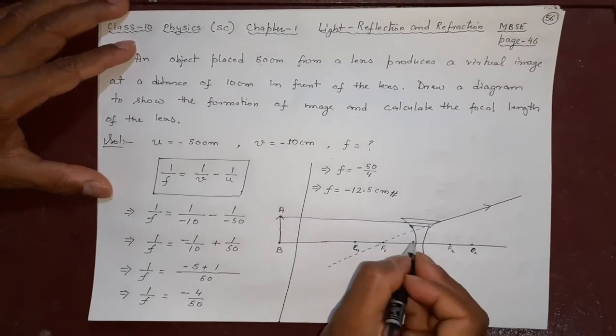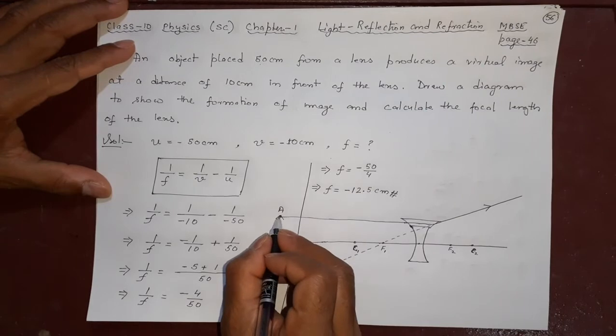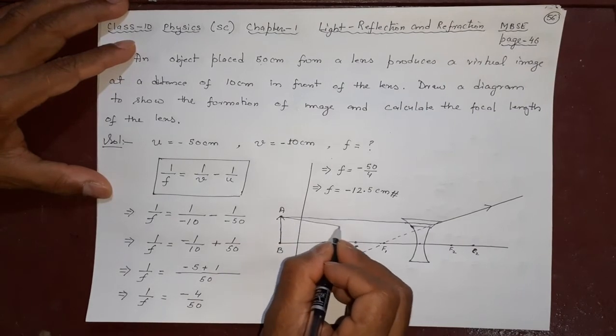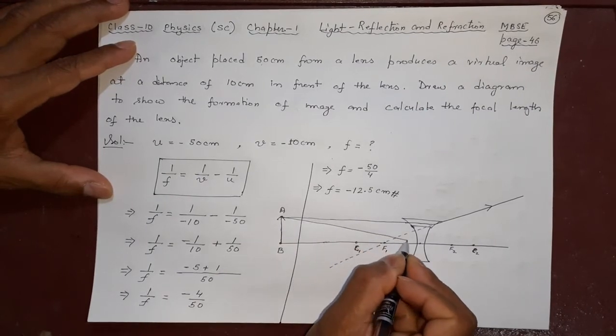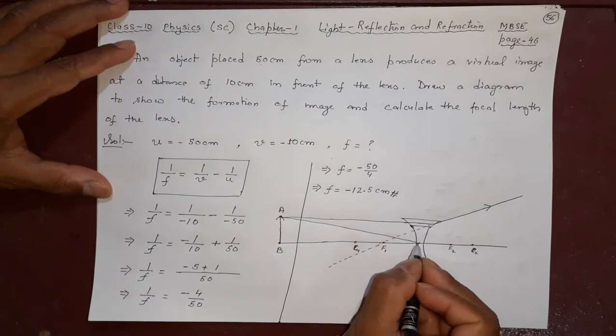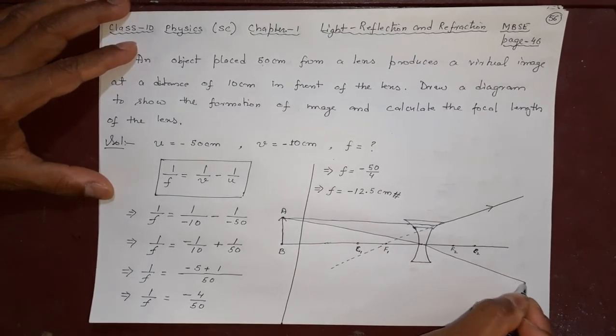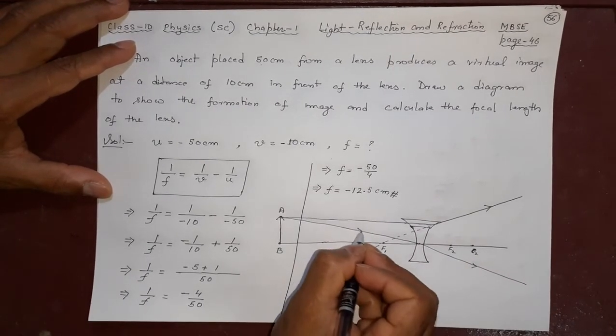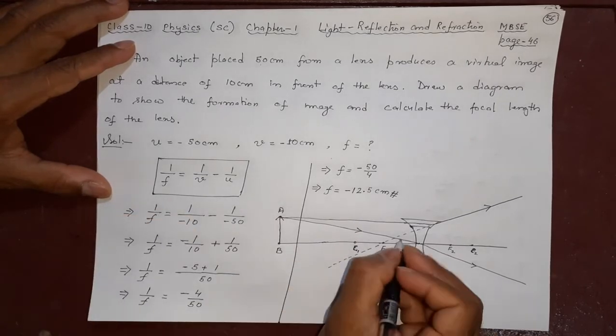What is the second thing that will happen? Second thing is it will pass from the optical center. It will pass from the optical center and it will pass through like this. In a lens it will not reflect.